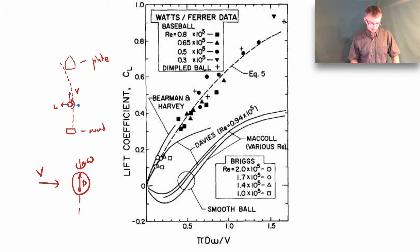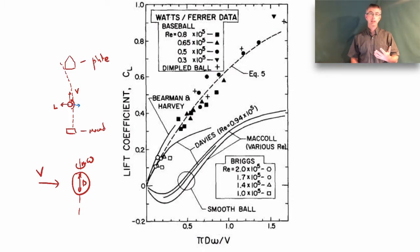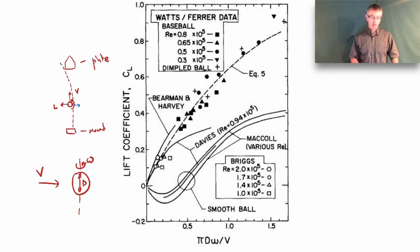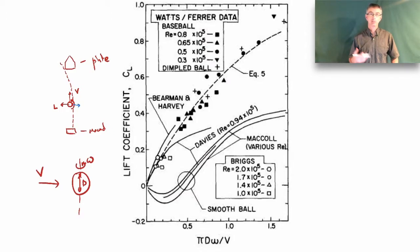When dealing with complex phenomena like flow around a spinning baseball, it's often easiest to collect data experimentally, express it as a lift coefficient, put it in a table or plot so that other people can fit curves to it or refer to it for their analysis.